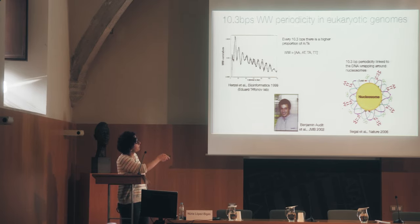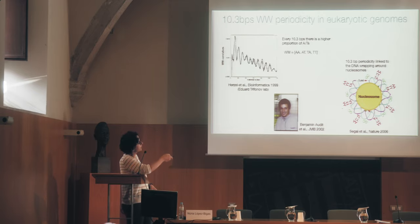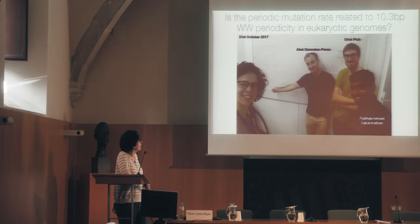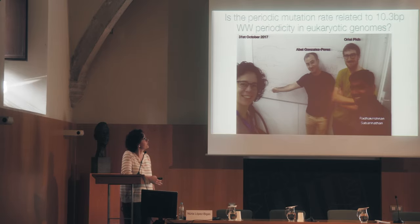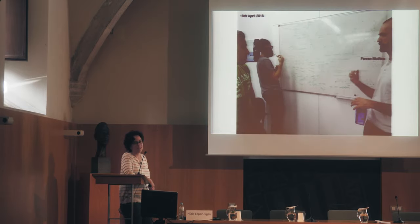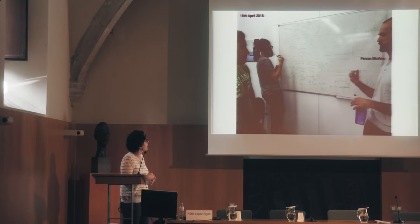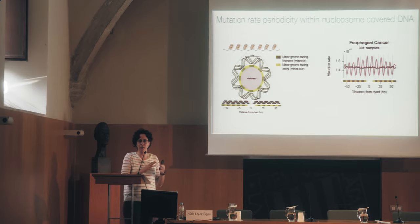When Uriol showed me this data, we thought maybe these two things are related. Our question was: is this periodicity Uriol is seeing in the mutation rate related to this periodicity of eukaryotic genomes? We felt it was an important moment and decided to take a picture of this date. We still had a lot of work — we joined Ferran to the team and did quite a lot of analysis on this periodicity. The next slides show the final story as we explain it in the paper.